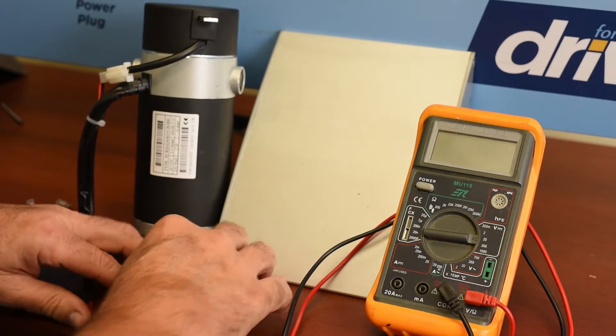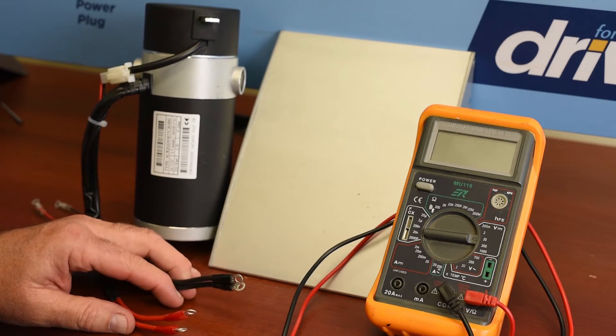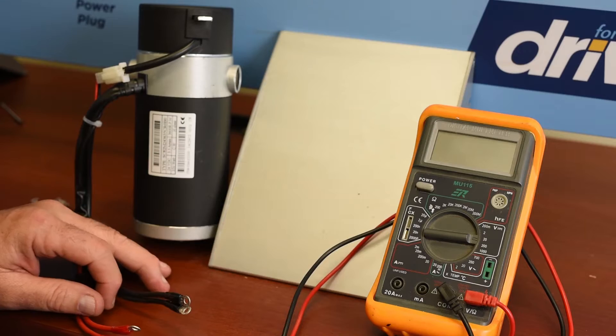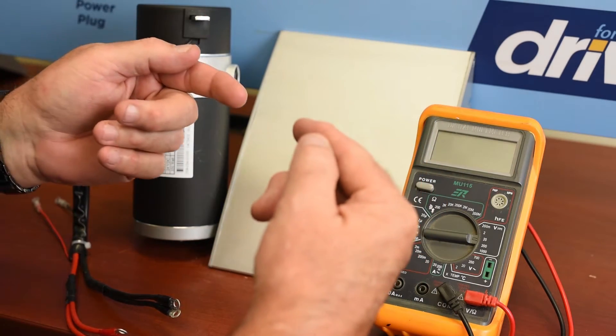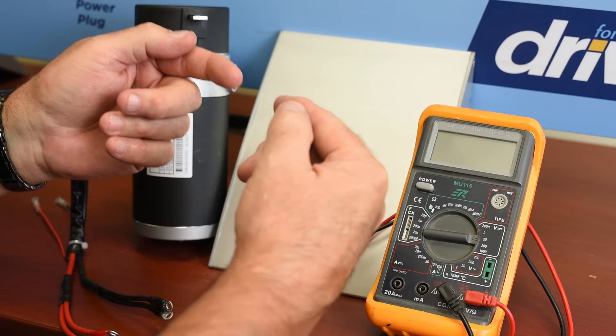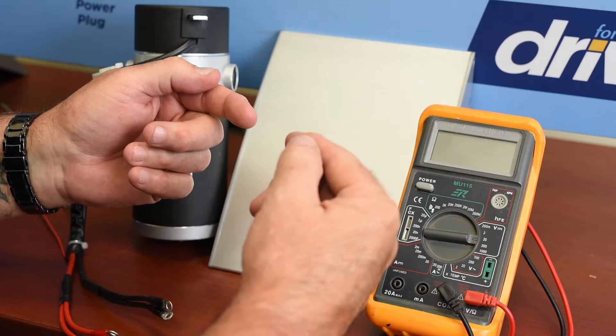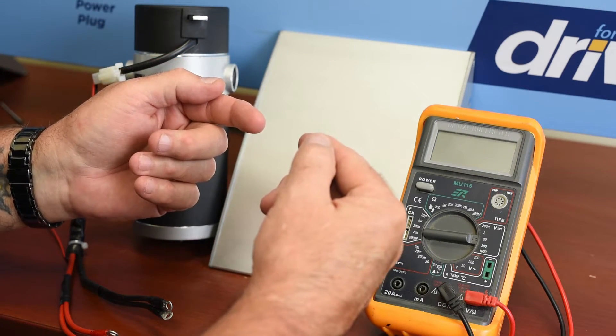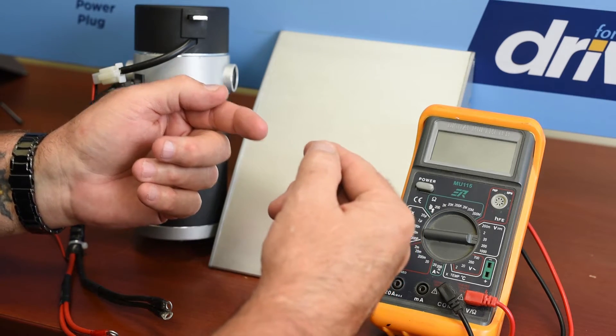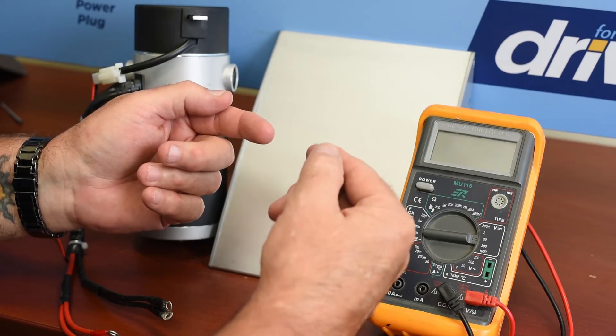But what we want to do here is measure the armature resistance. Now, what we've seen before is that the brushes come in contact with the commutator, which is attached to the coils of wire. And what we want to do is make sure that the coils of wire are not disconnected or burned out.